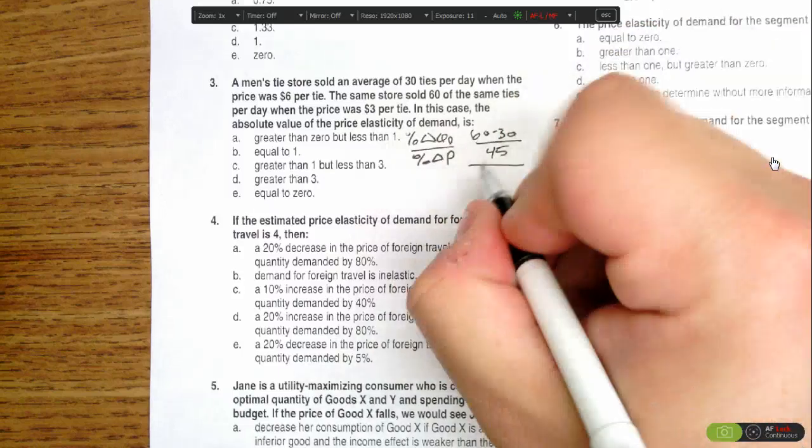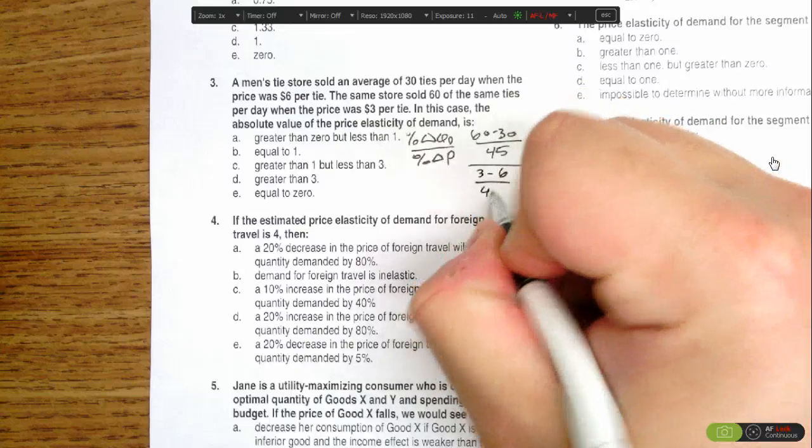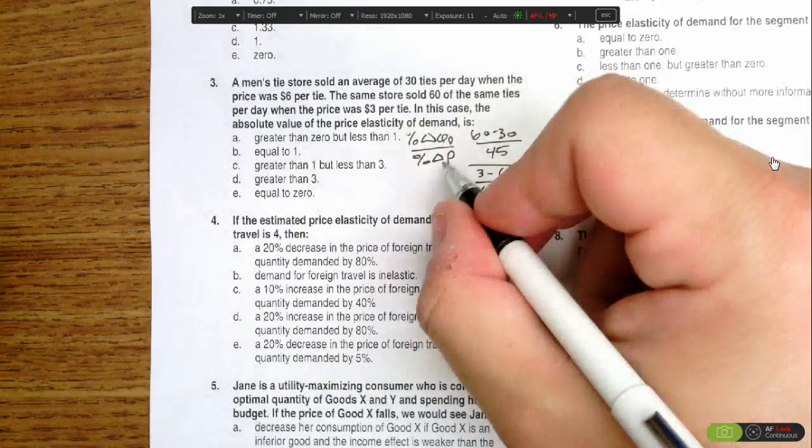And then with price, it would be new price minus old, 3 minus 6, divided by 4.5. That gets us our percent change in price.